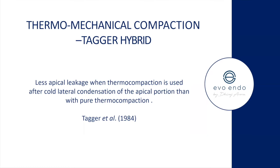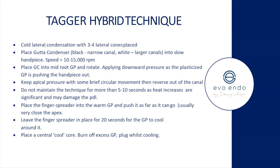Why do people do it? A hybrid technique shows less apical leakage when thermocompaction is used after cold lateral condensation of the apical portion than pure thermocompaction alone. The modification is: do cold lateral, sear everything off, and then do the thermocompaction. The technique details are there if you come across it, which you may in the near future.